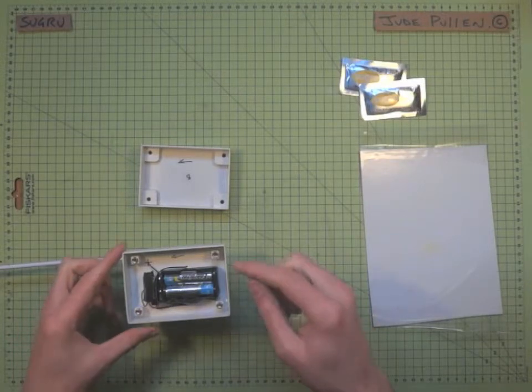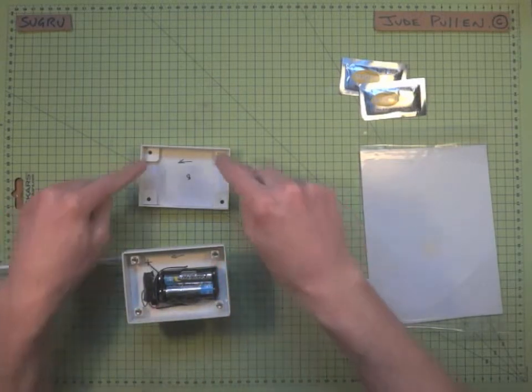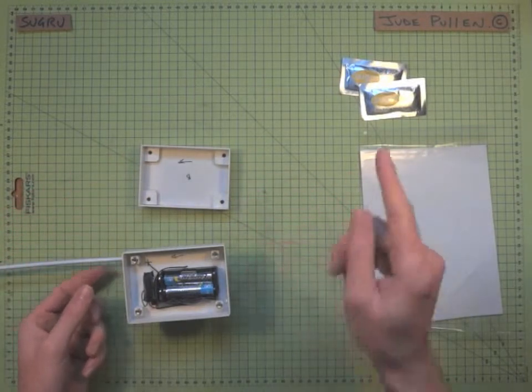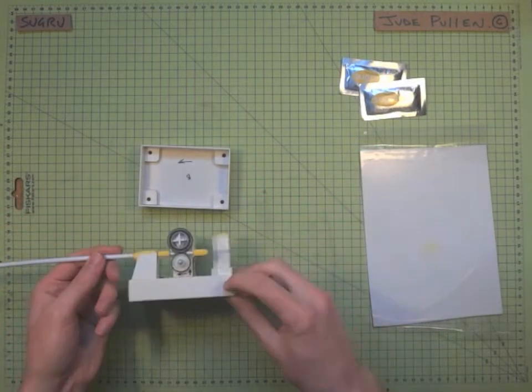Okay, so now that we've finished putting the brass inserts in the base and we've made our recesses for the bolts to go through, we can use a little bit of Sugru just to finish off the model.